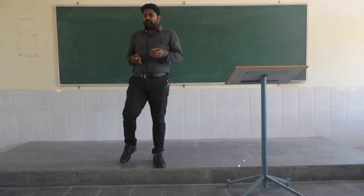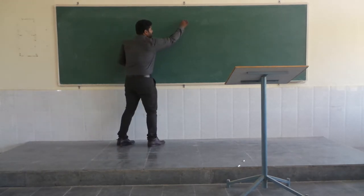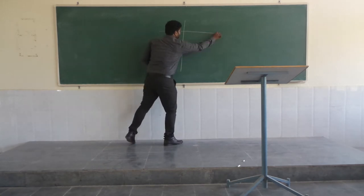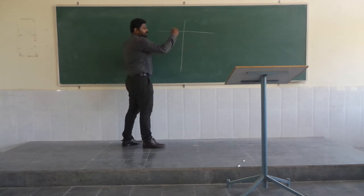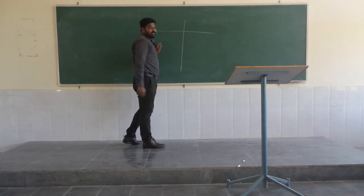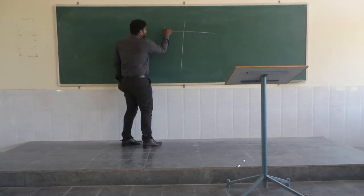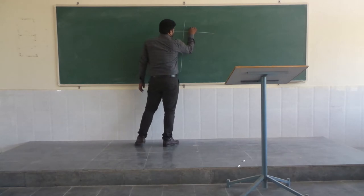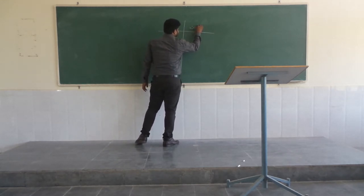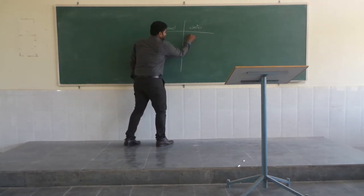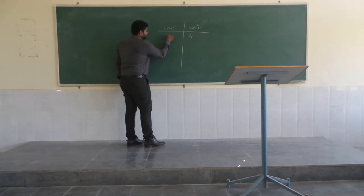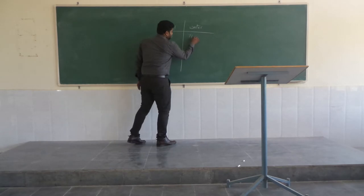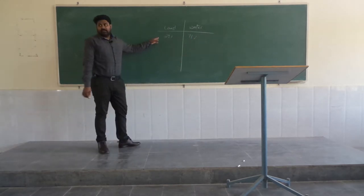First of all we should know about what is the proportion of the earth's surface. If we can see, the earth's surface consists of land and water. The water consists of approximately 71% and the remaining 29% is covered with land.